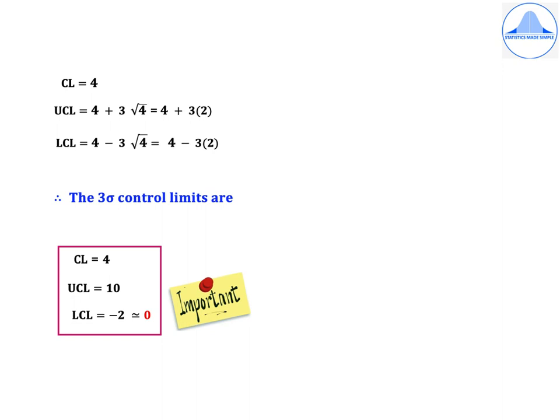Substituting, we get CL = 4. UCL is 4 + 3√4, which is 4 + 3×2. Similarly, LCL = 4 − 3√4, which is 4 − 3×2. Therefore, the 3-sigma control limits are CL = 4, UCL = 10, and LCL = −2. Whenever LCL is negative, it is approximated to 0.